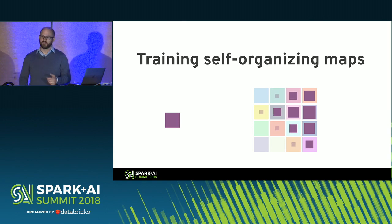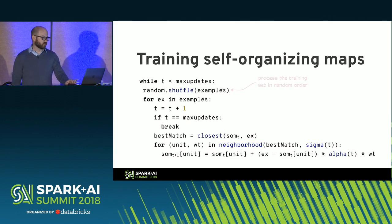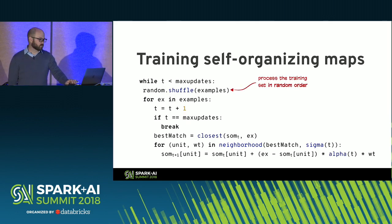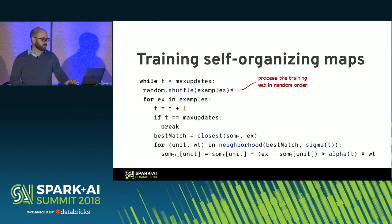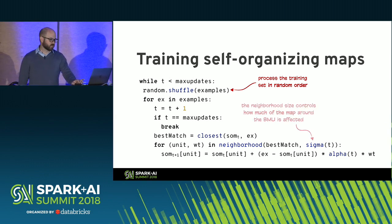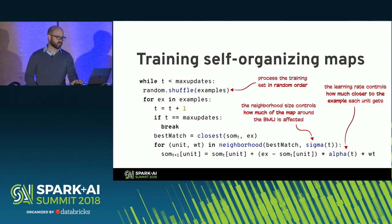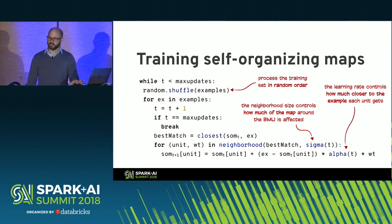This technique is pretty powerful, and you can even fit an implementation of it on a single slide. By processing the training set in random order every time we pass through it, we prevent the accidental organization of our training data from biasing our map. There are a couple of interesting hyperparameters: the neighborhood size and the learning rate, both defined as functions of training time whose value decreases over time. The neighborhood size controls how much of the map around the best matching unit is affected, and the learning rate controls how much closer to the example the affected area will get. We update the map by bringing the neighborhood of the best matching unit for each example slightly closer to the example under consideration.